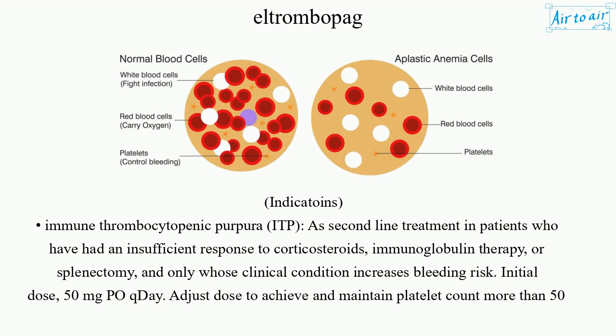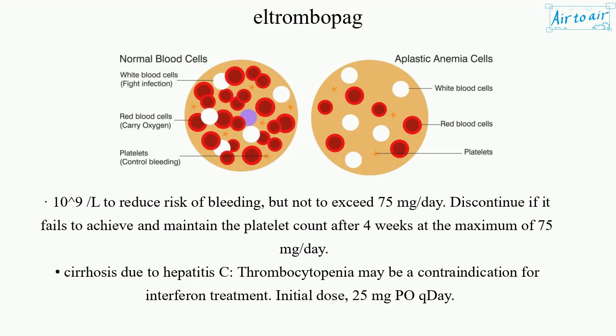Initial dose: 50 mg orally once daily. Adjust dose to achieve and maintain platelet count greater than 50×10⁹/L to reduce risk of bleeding, but not to exceed 75 mg per day. Discontinue if it fails to achieve and maintain the platelet count after 4 weeks at the maximum dose of 75 mg per day.